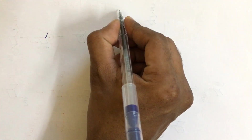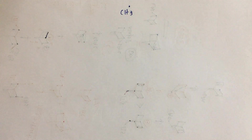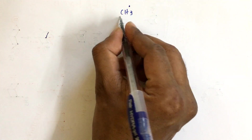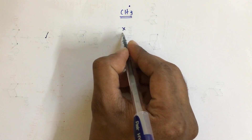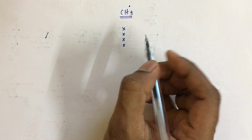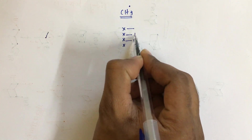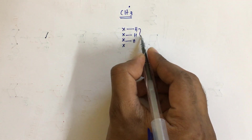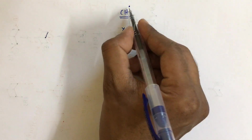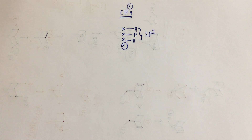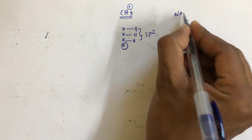Now consider the methyl radical. Carbon is a fourth group element with three hydrogens involved in hybridization, giving sp2 hybridization. The lone unpaired electron present here is not involved in hybridization. Similarly for NO2, the same concept applies.